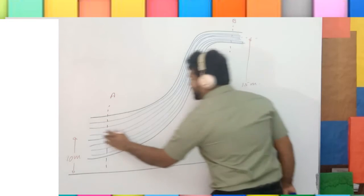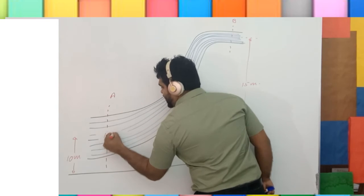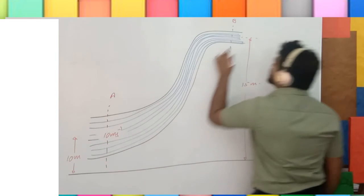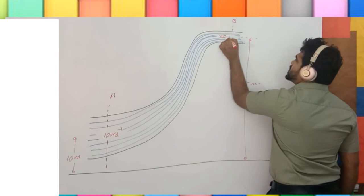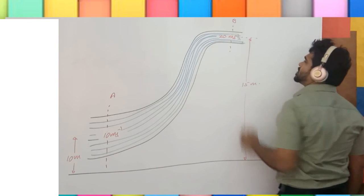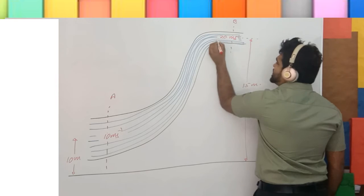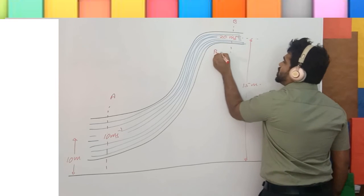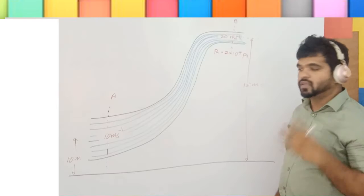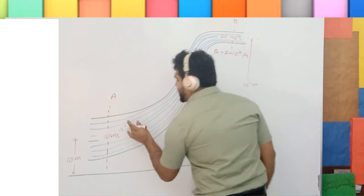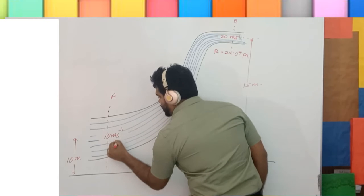Velocity, 10 meters per second. Here, 20 meters per second. Pressure at this place is p2, 2 times 10 to the power 4 pascals. You have to determine the pressure at this place, p1.